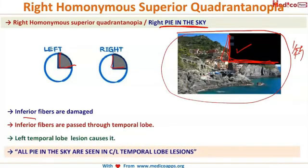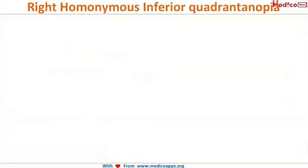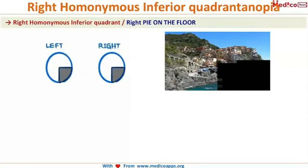Similarly, right homonymous inferior quadrantanopia is called 'pie on the floor' — the lower part of the field is lost. This occurs due to superior fiber damage.